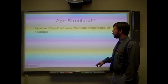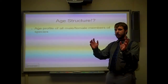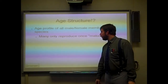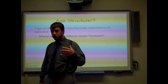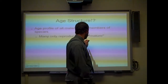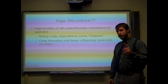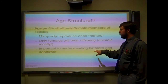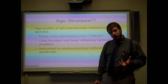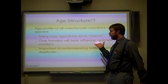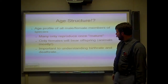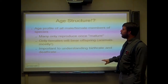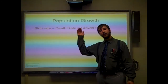Age structure — also called an age profile — is basically just looking at the males and females and asking how old is most of the population. The reason it's important is because most species of organisms will only mate once they reach maturity. Remember, only the females will bear offspring, so maturity is really important for the females especially, unless it's seahorses and other exceptions. By understanding the age structure and when individuals are mature enough to reproduce, we can get a good idea of the birth rate and the death rate, which together give us a good understanding of the growth rate.